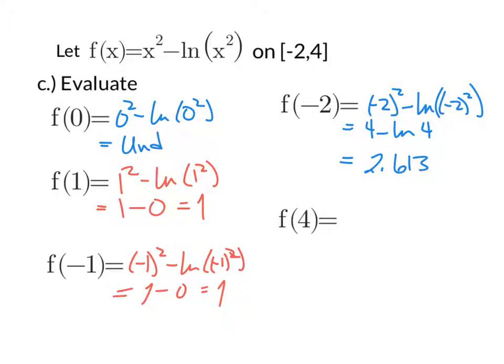For f of 4, same deal. 4 squared minus the natural log of 4 squared. 16 minus the natural log of 16 gives us a value of 13.227.